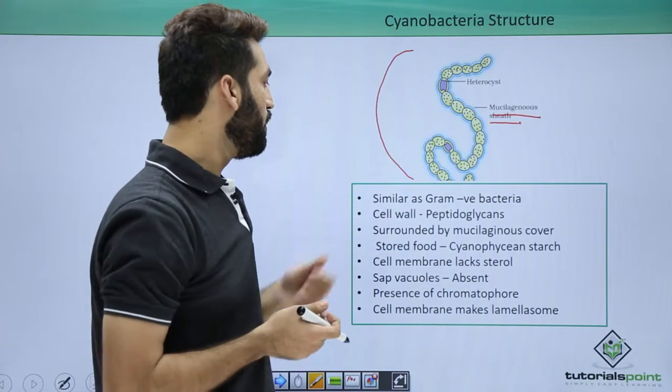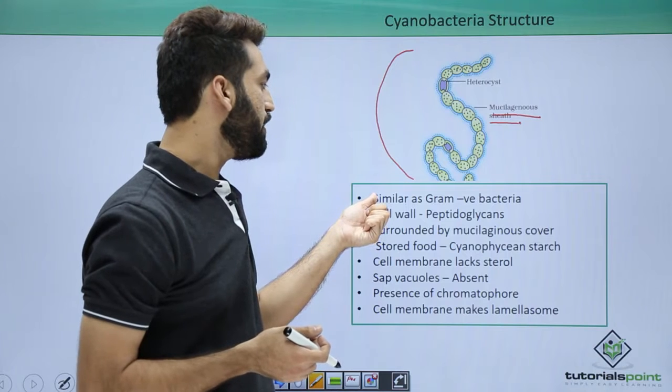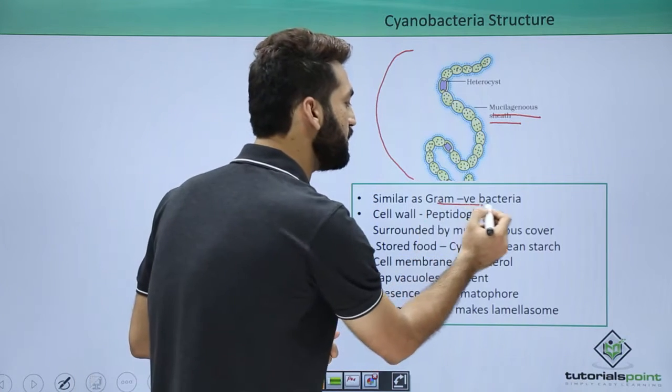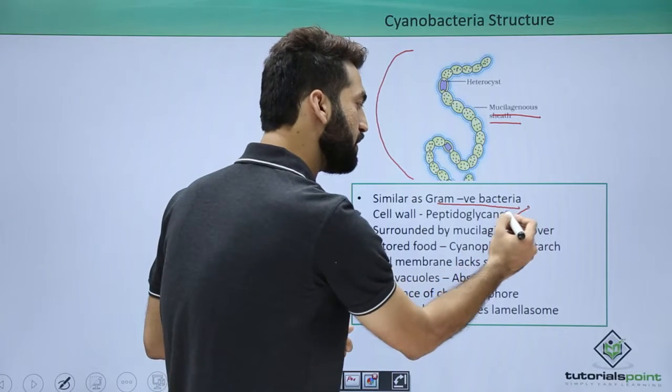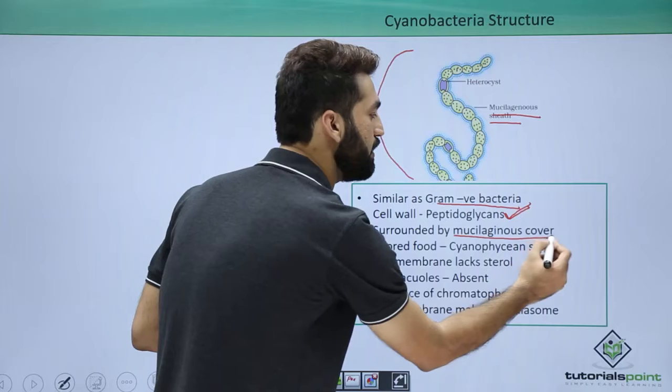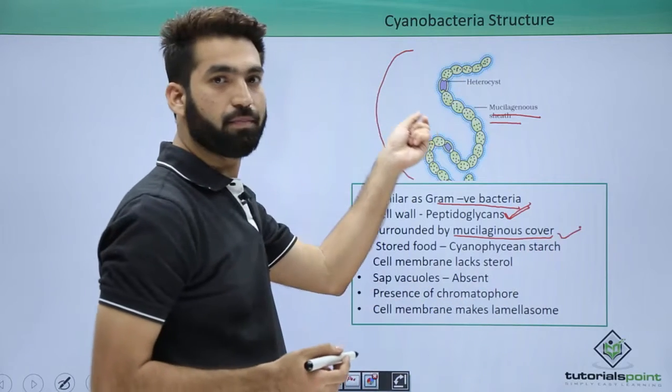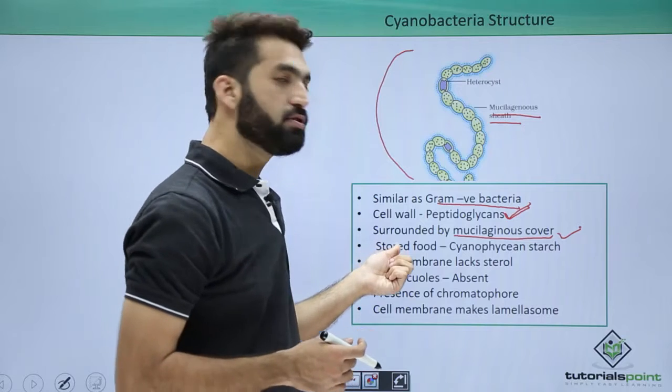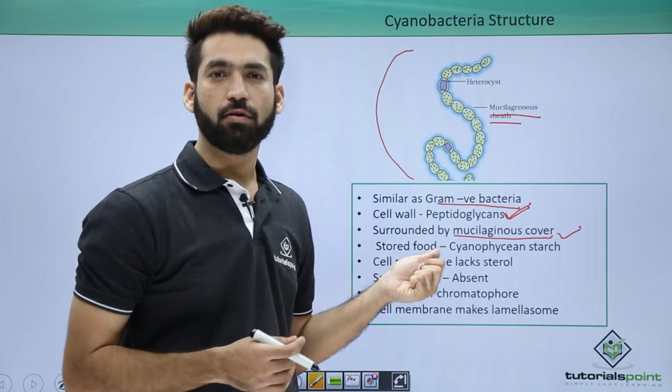I've already told you that cyanobacteria are similar to gram-negative bacteria in structure, so they have peptidoglycans in their cell wall. They remain surrounded by a mucilaginous layer, which protects the cyanobacteria under this cover.